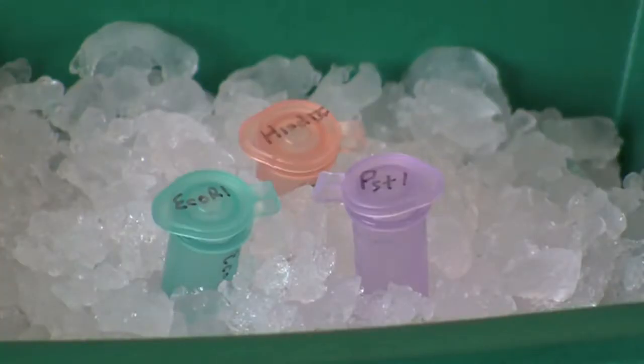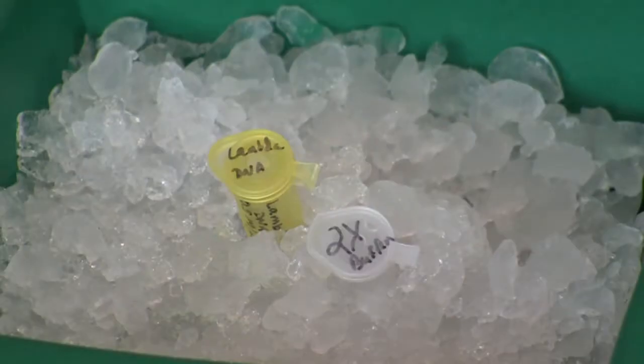For this activity, you will need samples of ECO-R1, HINDI-3, and PST1 restriction enzymes in microcentrifuge tubes on ice. You will also need samples of lambda DNA and 2X restriction buffer on ice. It is helpful to use color-coded tubes to organize and keep track of samples in this activity.